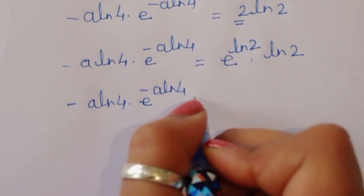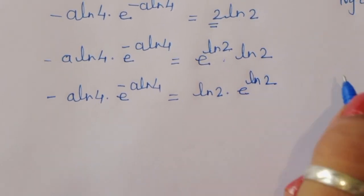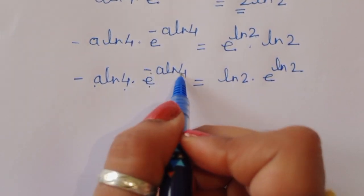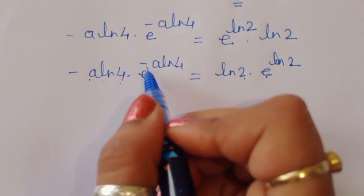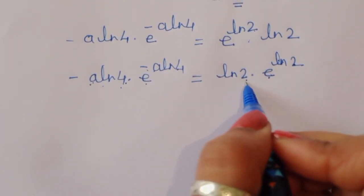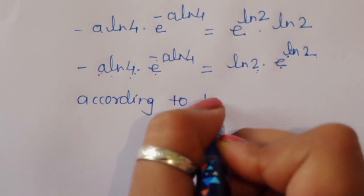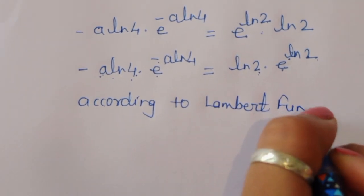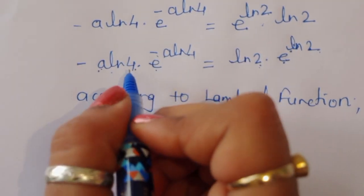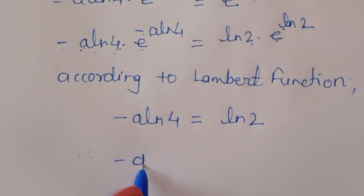So minus a ln 4 times e to the power minus a ln 4 equals ln 2 times e to the power ln 2. Comparing both sides, we have the same form: minus a ln 4 in the exponent on the left and ln 2 on the right. According to the Lambert W function, comparing the same expression on both sides, we conclude that minus a ln 4 is equal to ln 2.